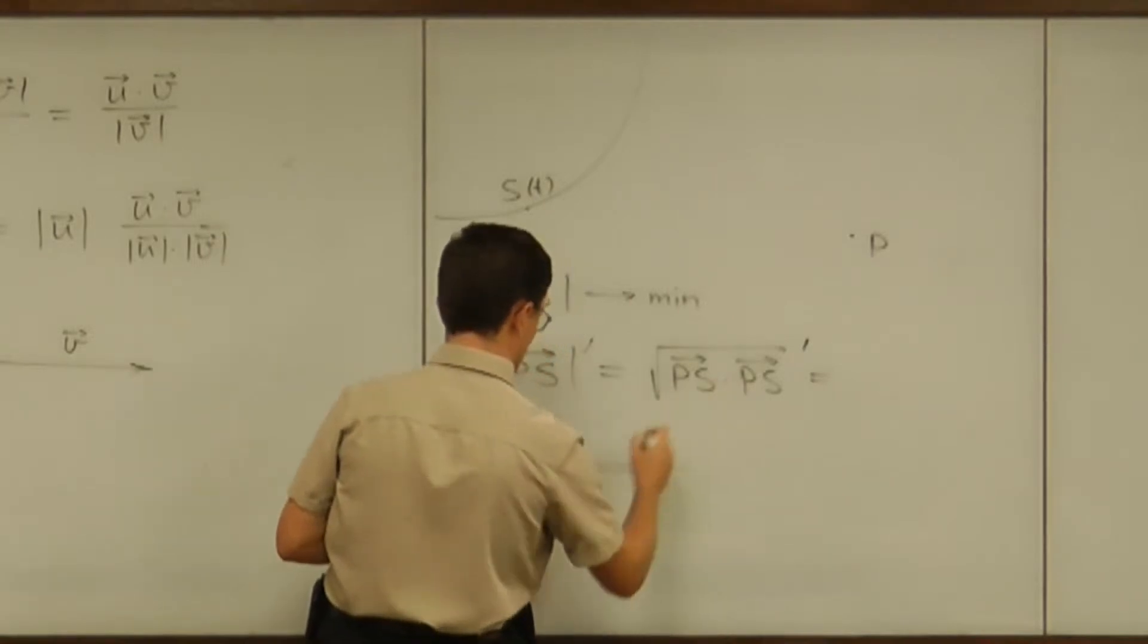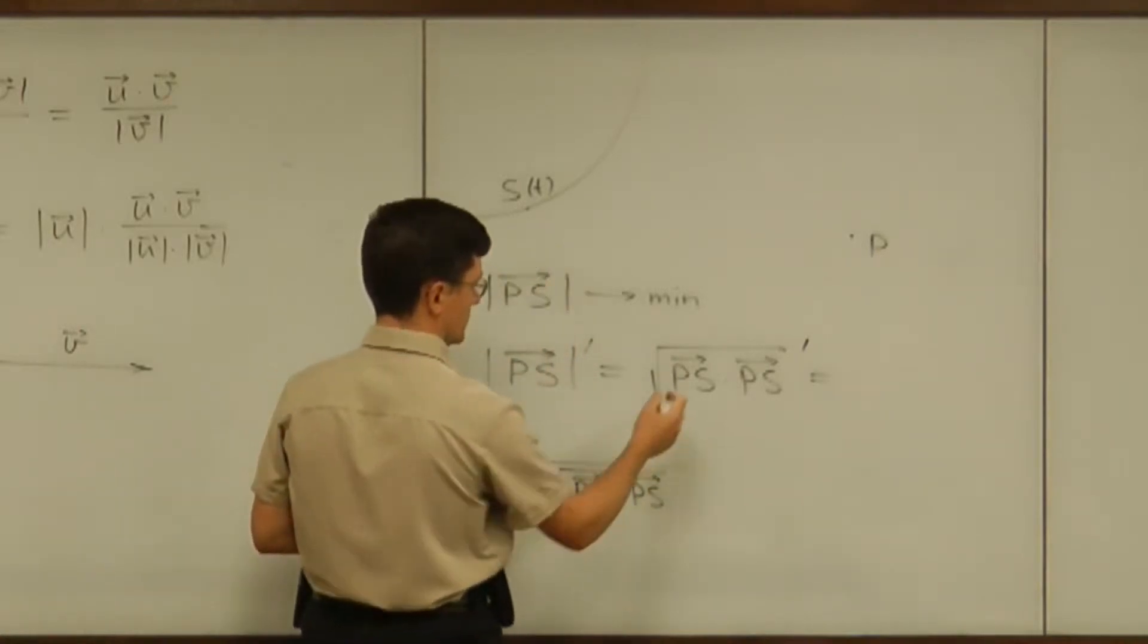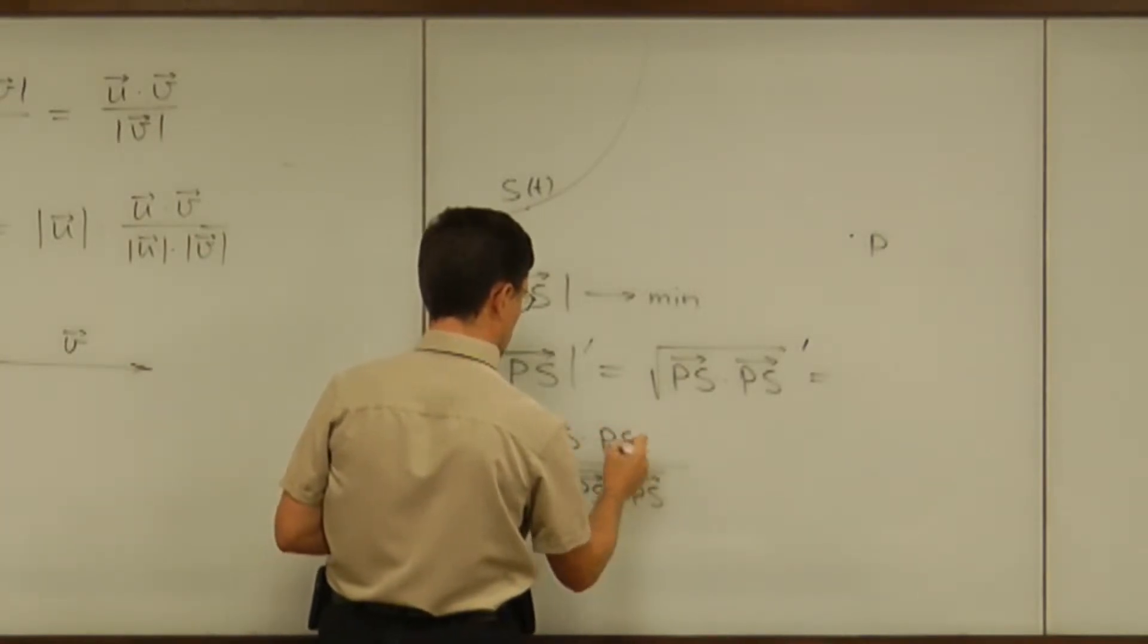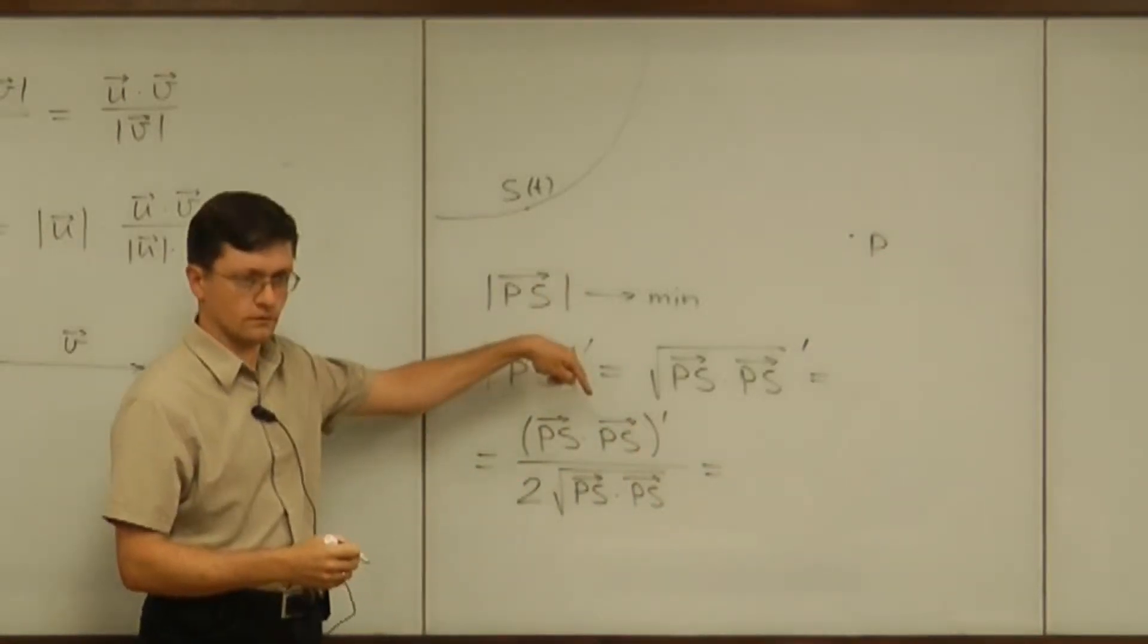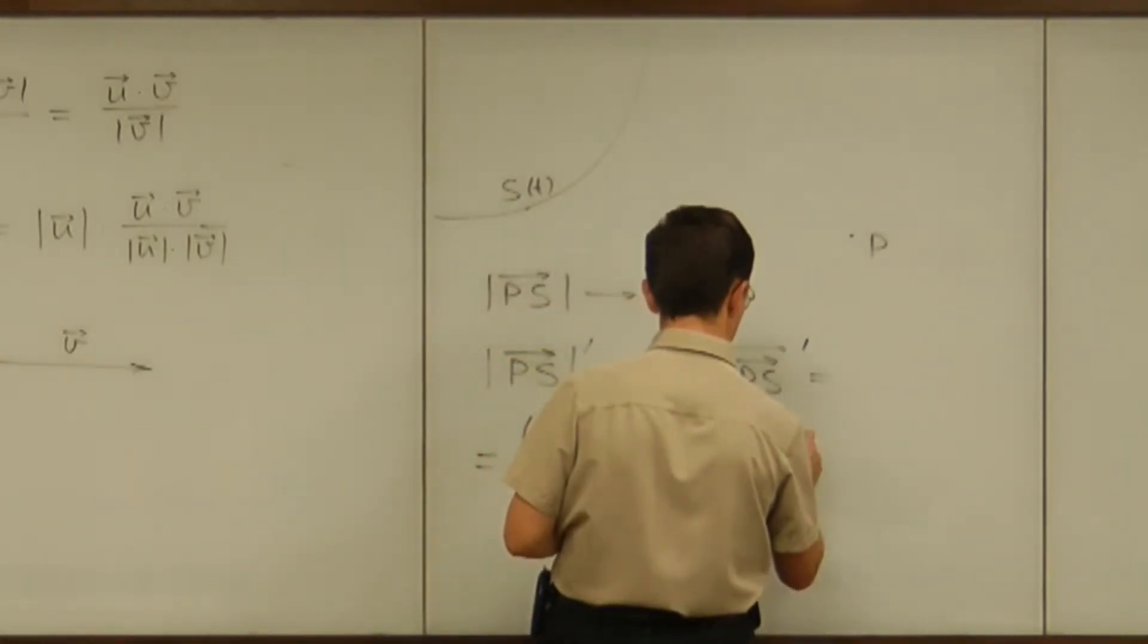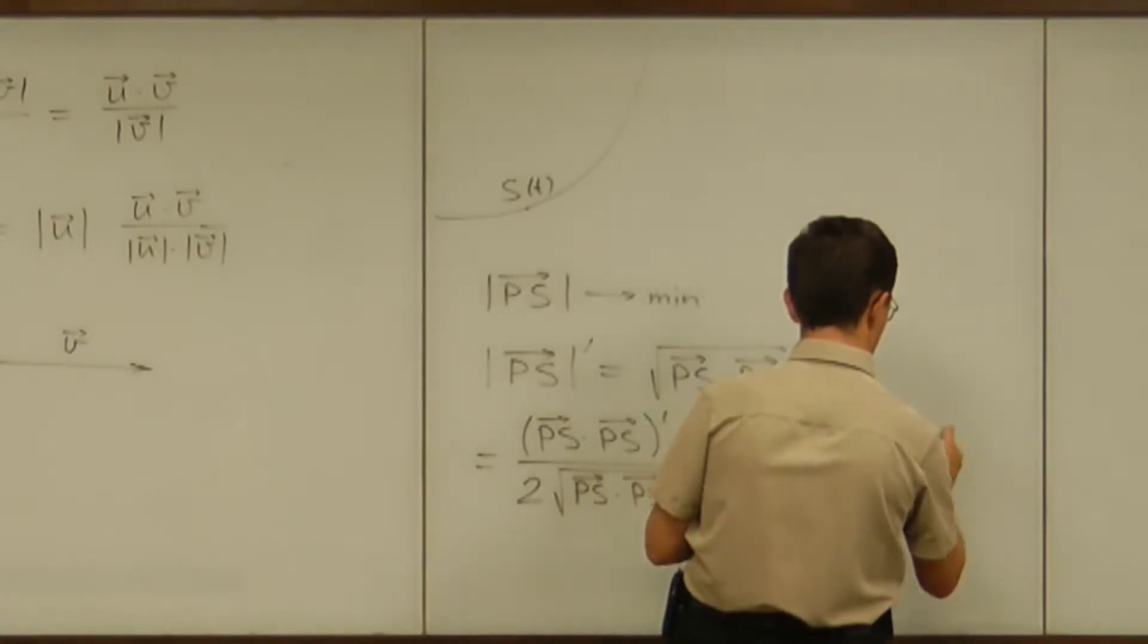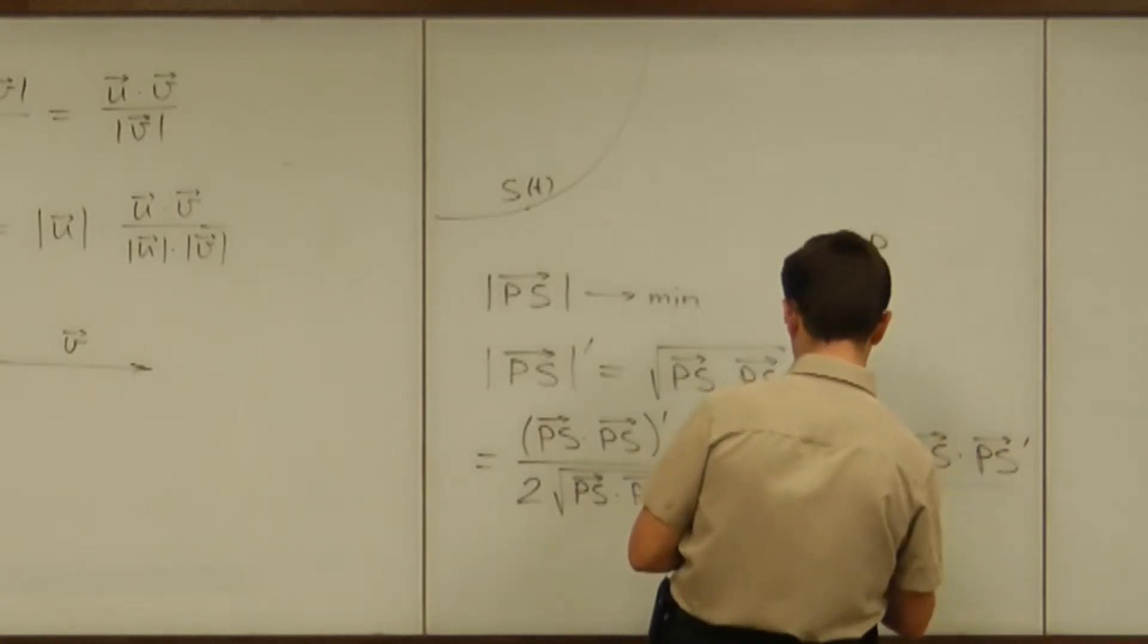So it will be 1 over 2 times the square root of the same dot product, PS dot PS, multiplied by the chain rule by the derivative of that dot product. And then I apply the product rule to differentiate the dot product. So it is PS' dot PS plus PS dot PS', divided by...